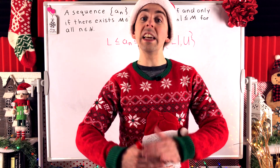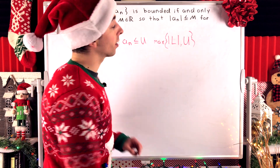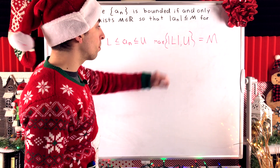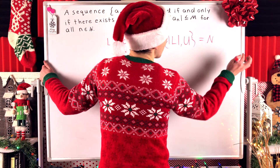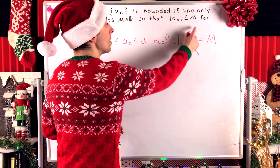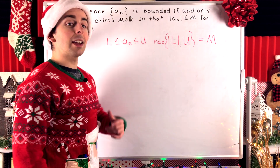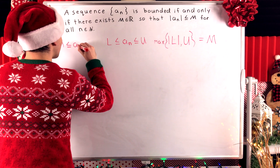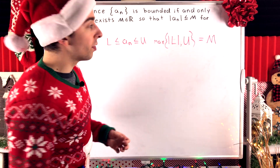All of that was intuition as to how we identify this number as one that might work, but we still have to prove that it works. For convenience, let's call this number M — the maximum of the absolute value of the lower bound and the upper bound on our bounded sequence: M = max(|L|, U). A nice way to show that the absolute value of something is less than or equal to M is to show that -M ≤ aₙ ≤ M, which is equivalent to |aₙ| ≤ M.